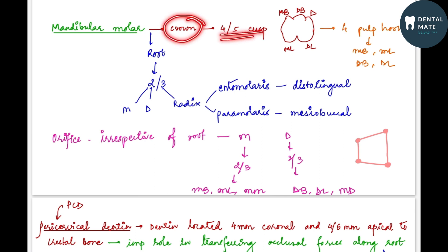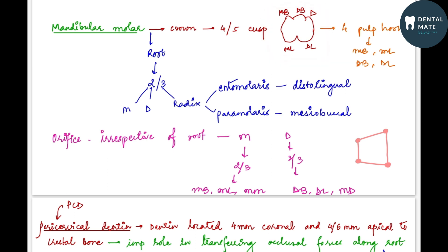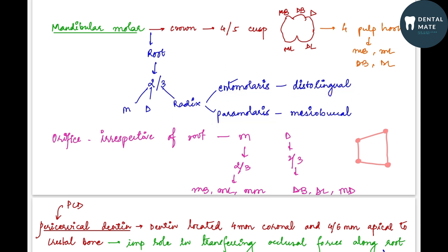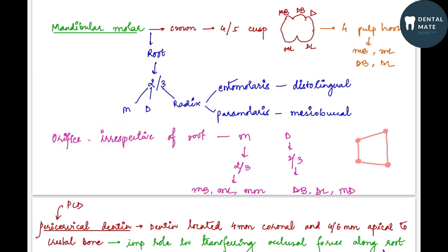The crown of a mandibular molar can have four or five cusps: mesiobuccal, mesiolingual, distobuccal, distolingual, and sometimes an extra distal cusp present on the buccal side. There are four pulp horns: mesiobuccal, mesiolingual, distobuccal, and distolingual. As for the root, there could be two or three roots. Usually two roots are present — the mesial and the distal root. Sometimes an extra third root can be seen, known as radix entomolaris if present on the distolingual side, or paramolaris if present on the mesiobuccal side.